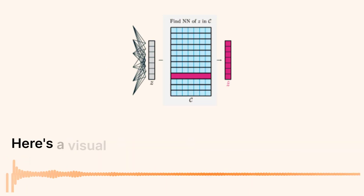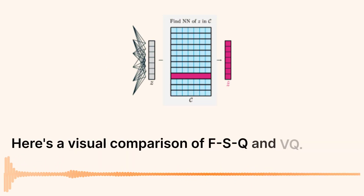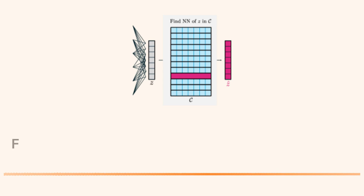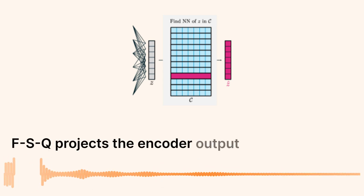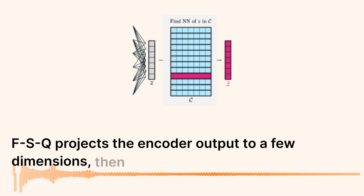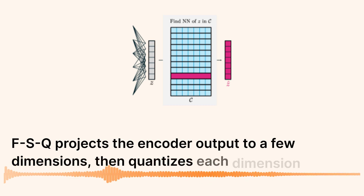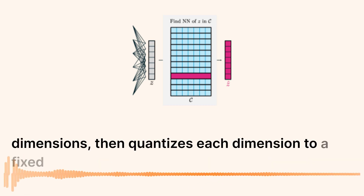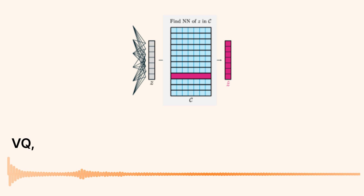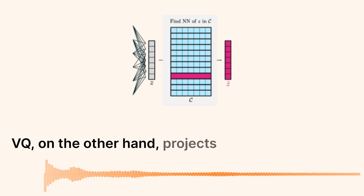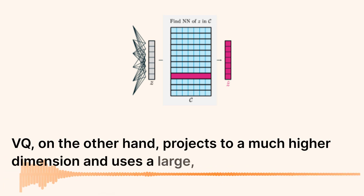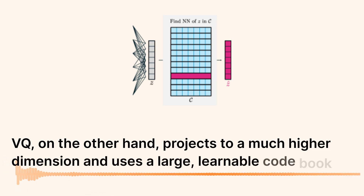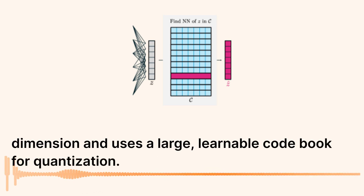Here's a visual comparison of FSQ and VQ. FSQ projects the encoder output to a few dimensions, then quantizes each dimension to a fixed set of values. VQ, on the other hand, projects to a much higher dimension and uses a large, learnable codebook for quantization.